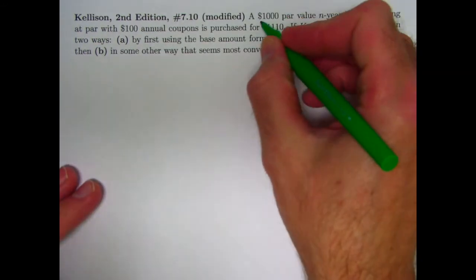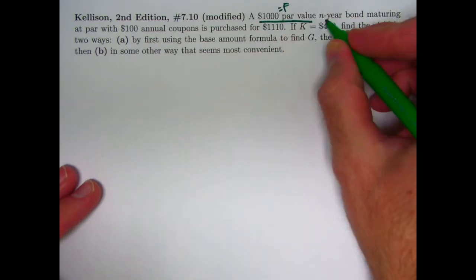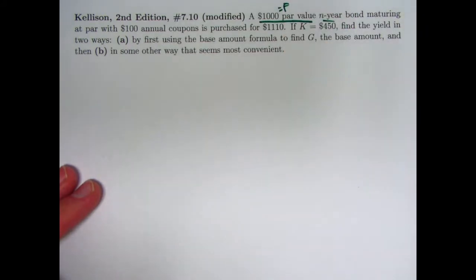Here's the problem. We've got a $1,000 par value bond. This is the face amount. It's in your bond. We don't know N. Maybe that won't matter.